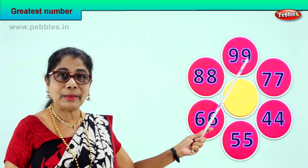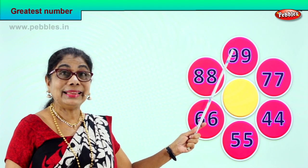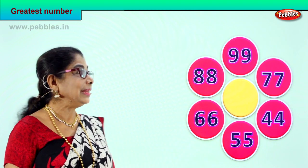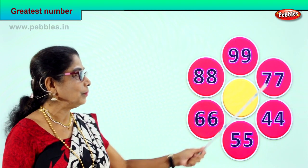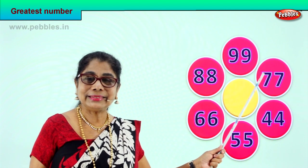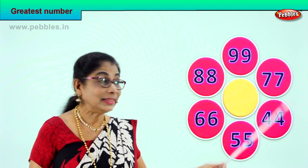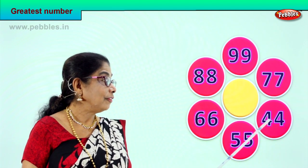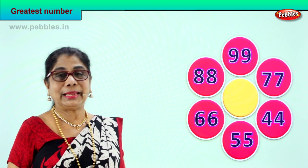99: how many tens? 9 tens. 77: 7 tens. 44: 4 tens.